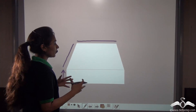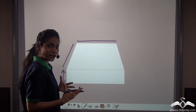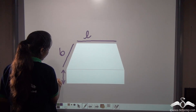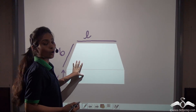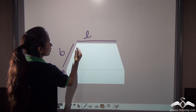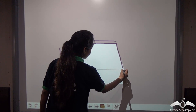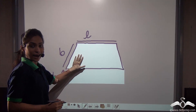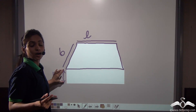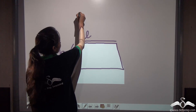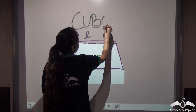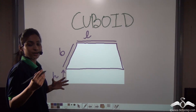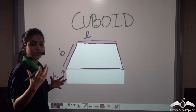So from 2D we created an object which has three dimensions — that is 3D. This object now has a length, a breadth, and a height or thickness, and can be called a three-dimensional object. Its face is actually a rectangle, and a rectangle with some thickness is called a cuboid. So what is a cuboid? A cuboid is actually a rectangle with some thickness or height.